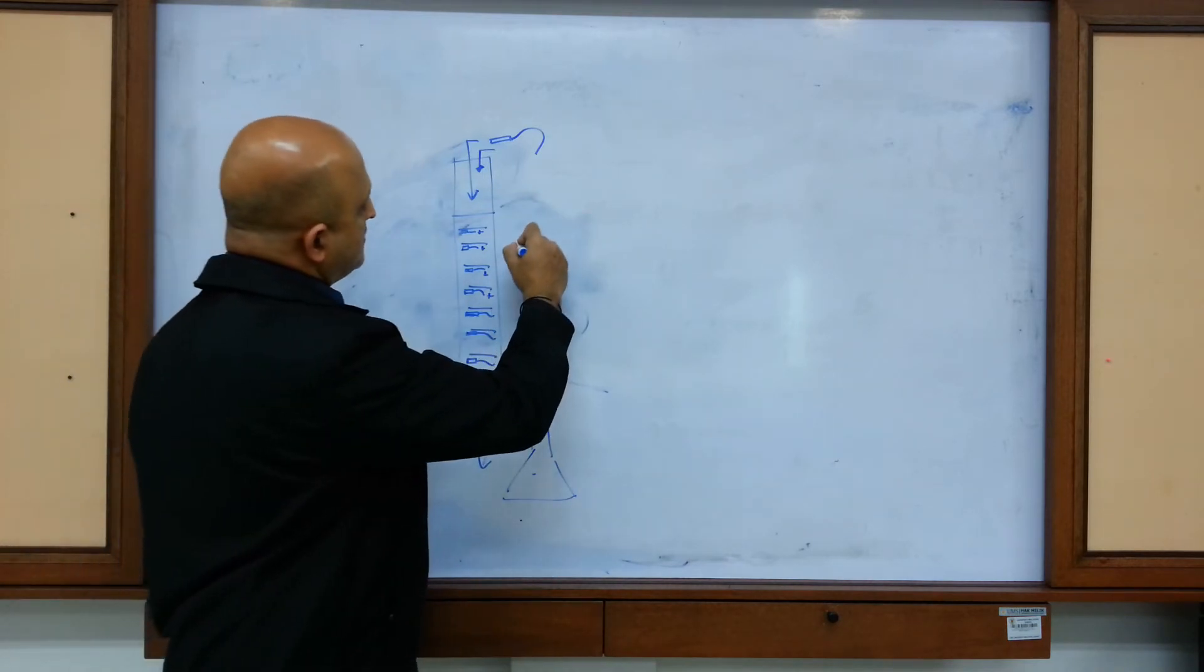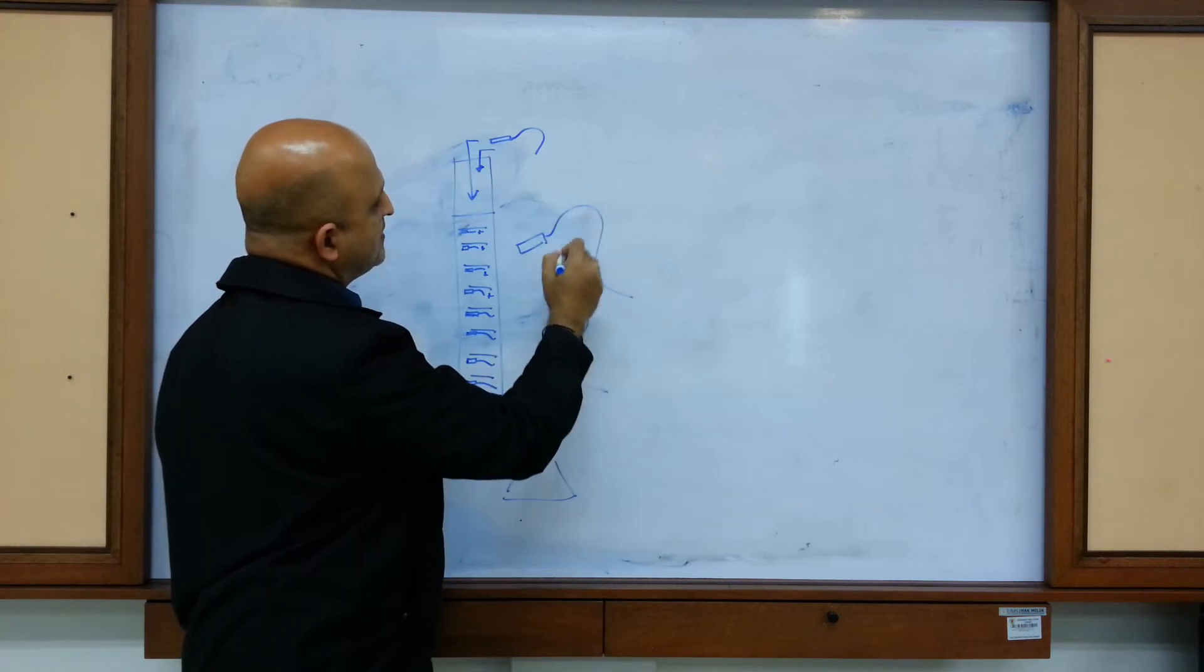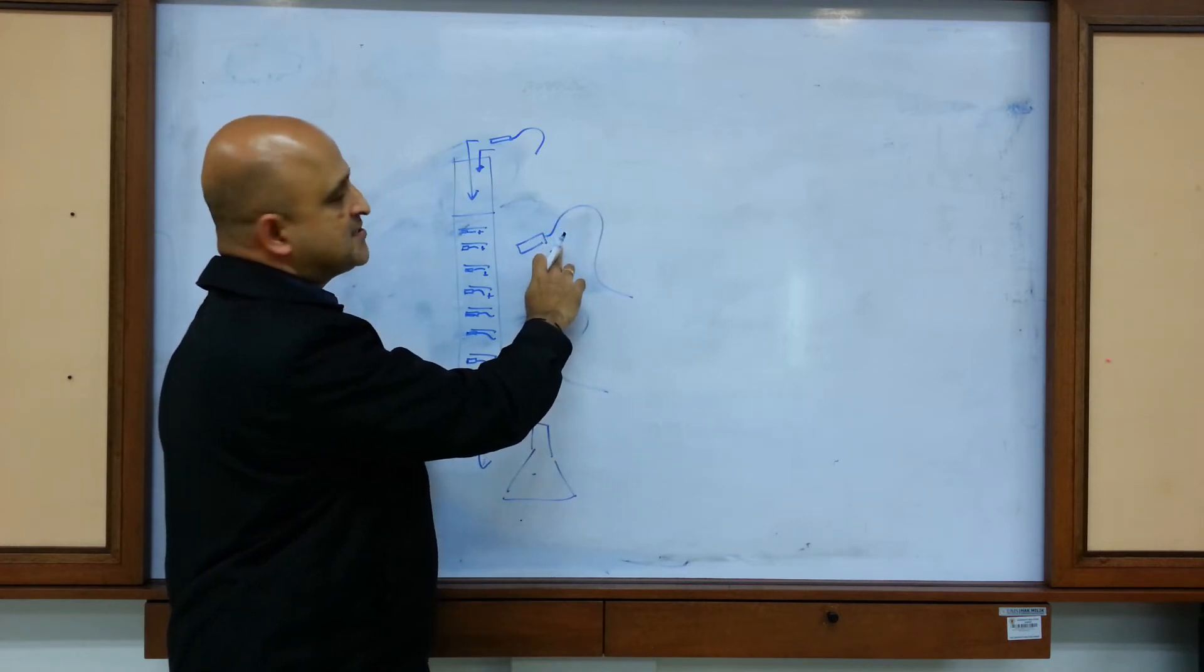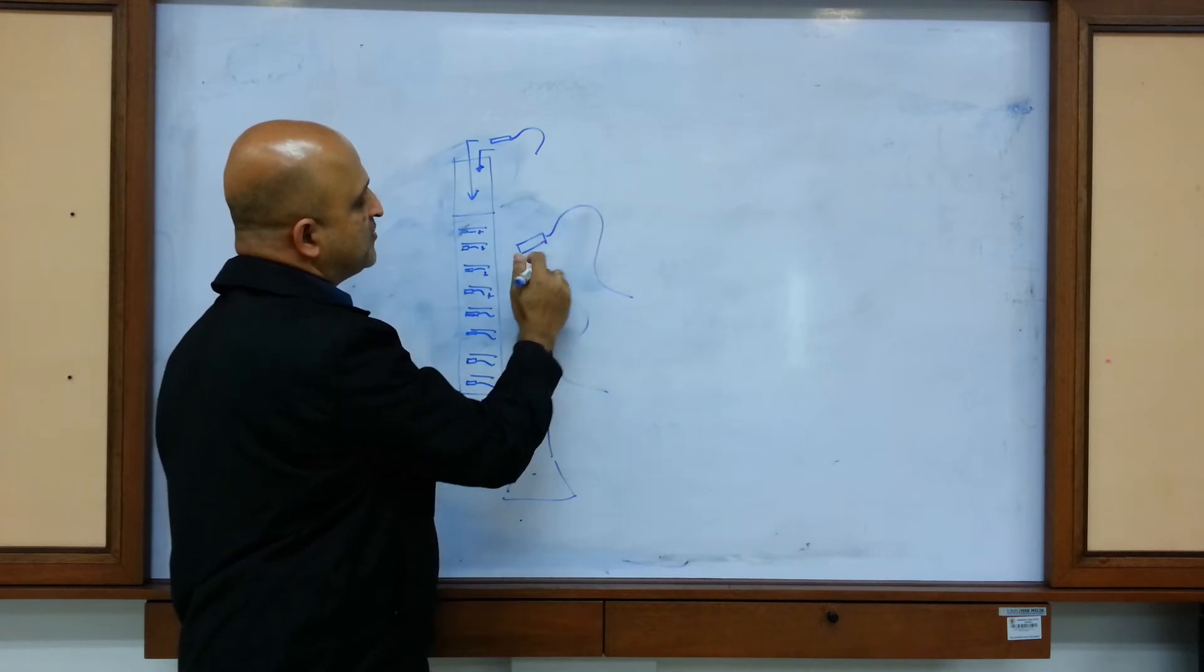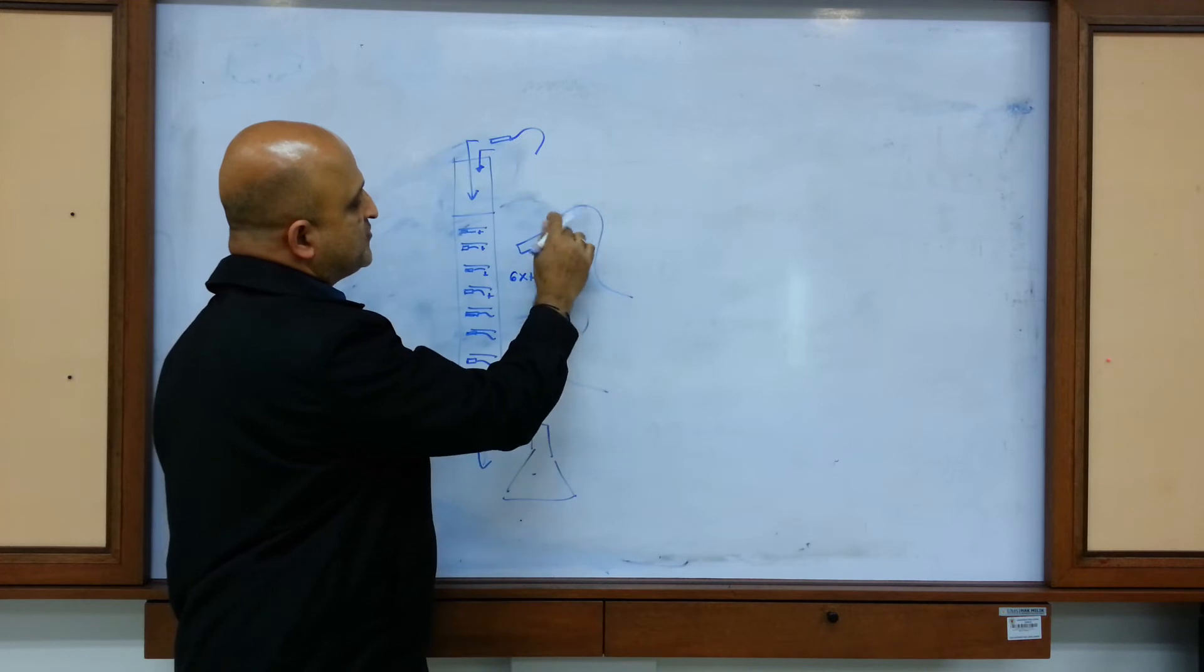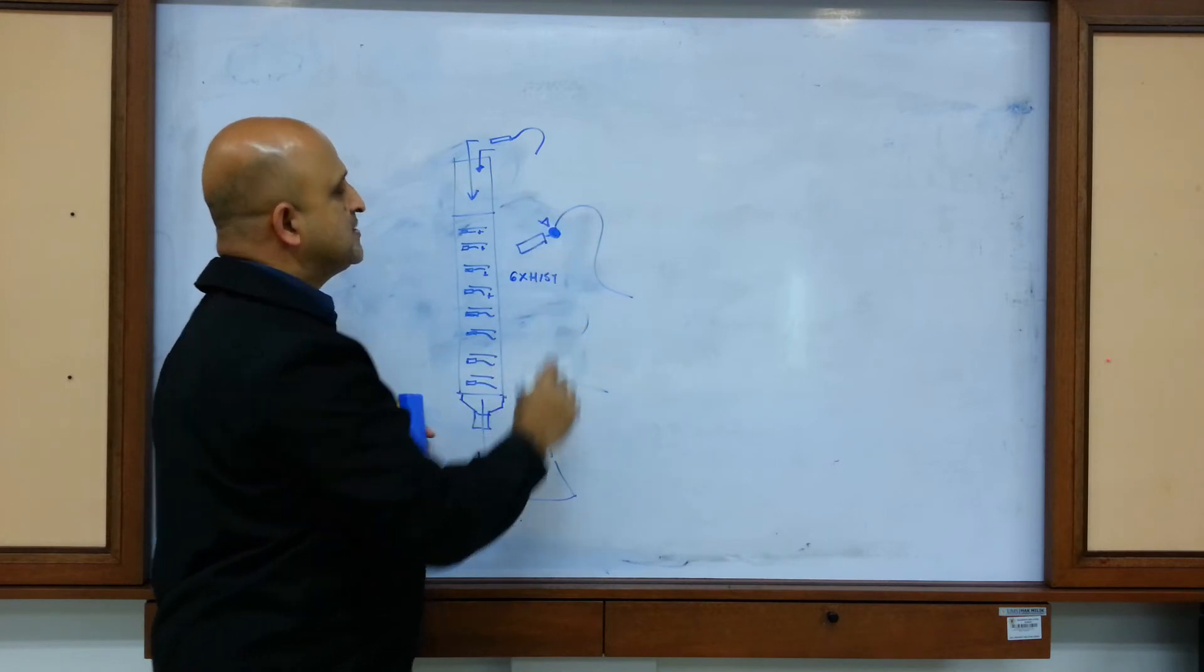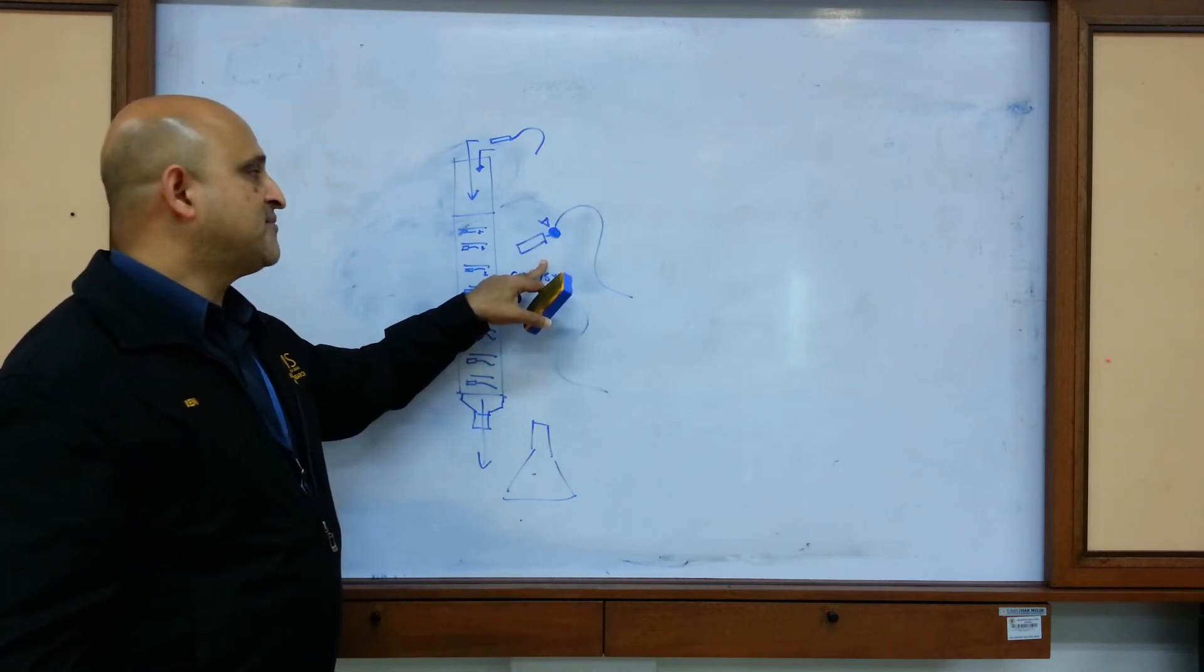Some researchers may require a protein which is cleaved from its tag. This can be achieved by usage of specific enzymes. For instance, the 6X histidine tag is fused to this protein via an enterokinase cleavage site, so this enterokinase cleavage site can be cleaved.